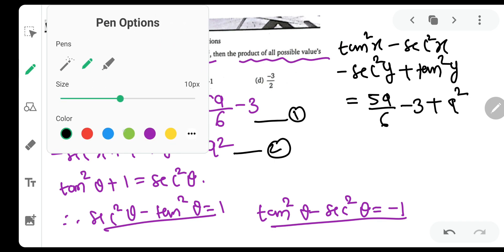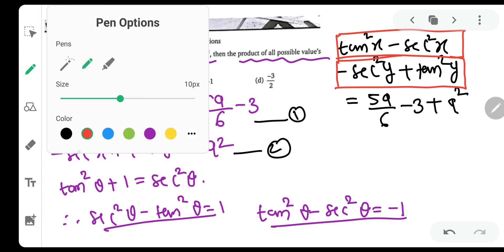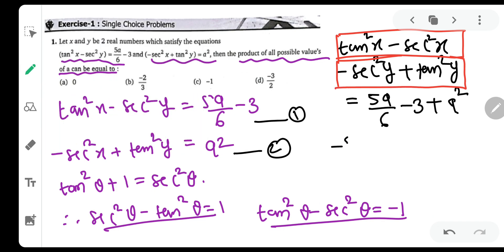Now check this part very properly: tan square x minus sec square x will be minus 1, and even this part, tan square y minus sec square y, will also be minus 1. Basically, this will be minus 2 equals 5a by 6 minus 3 plus a square.